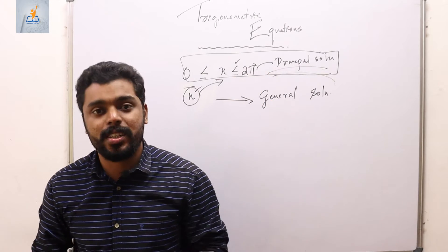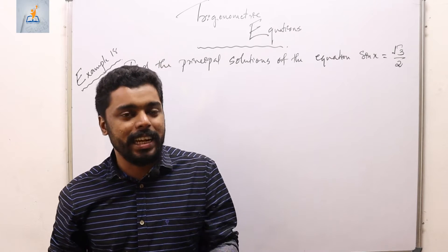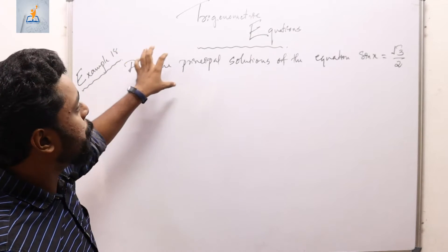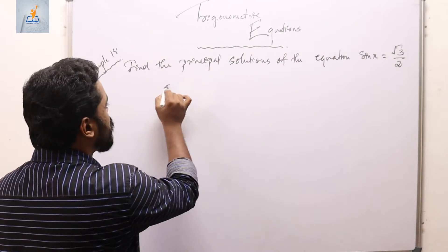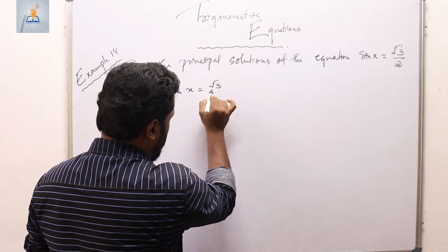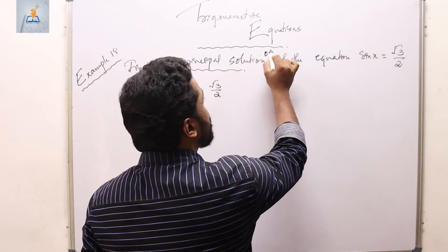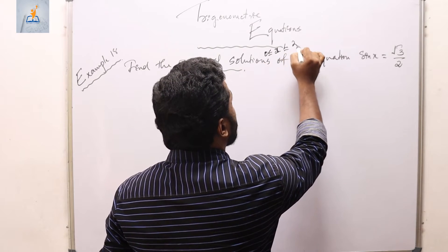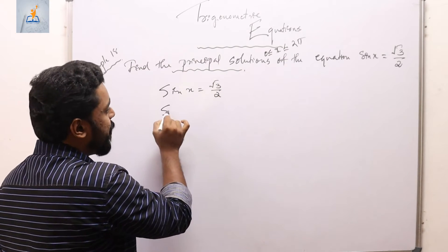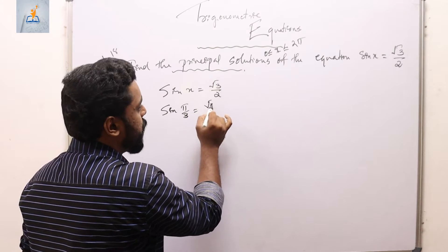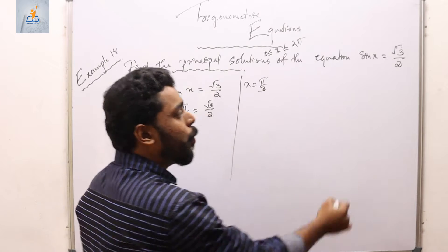To discuss principal solutions, let us look at example 18: find the principal solutions of sin x = √3/2. The solution must lie between 0 and 2π. We directly know that sin(π/3) = √3/2, so x = π/3 is one solution.